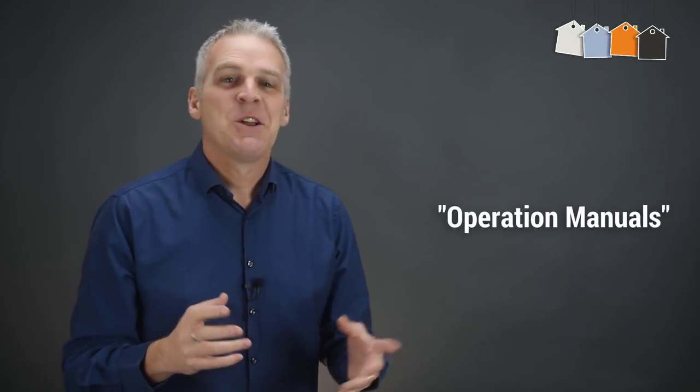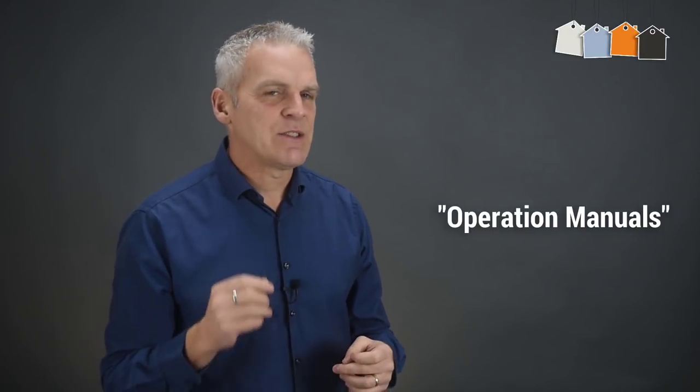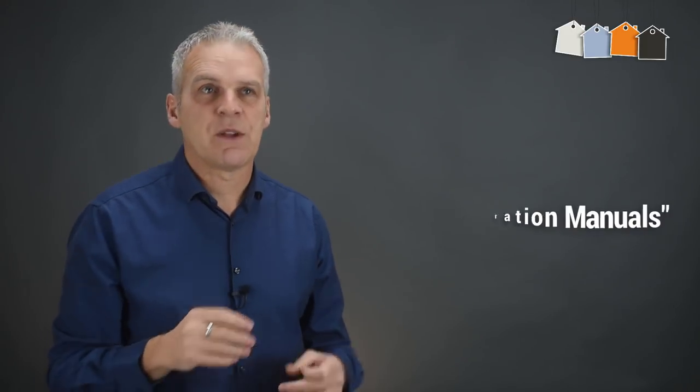Next, you need to document how to do a task. And I call these documents my operation manuals, which sounds really grand, but they're really not. In reality, they're just a list of tasks that you have to run through in order to do a certain job. So, for example, when we reference a tenant, we run through a 31-point checklist, and this is all laid out in our referencing operations manual.